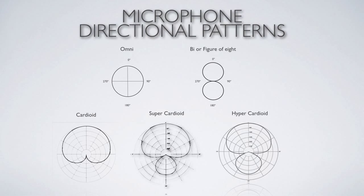Looking at these patterns again, there are different variations of the cardioid. The cardioid can be made into a tighter pattern — more directional in the direction we're pointing — but there's a trade-off: a little lobe appears on the back of the heart shape, making the back slightly more sensitive but the sides less sensitive. Going one step further, the supercardioid and hypercardioid have even more lobe in the back but even less side sensitivity. So there are different flavors of cardioid — wide/fat cardioid, supercardioid, or hypercardioid.